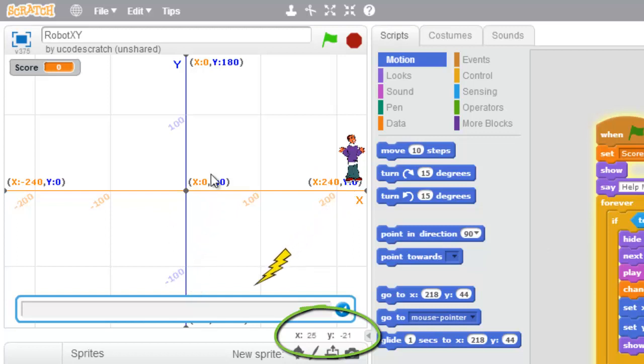This area right here always shows me where my cursor is at and it gives me the x and y coordinate. So I never want my character, my kid, to go under this area right here. So never under negative 125. So that's my y.